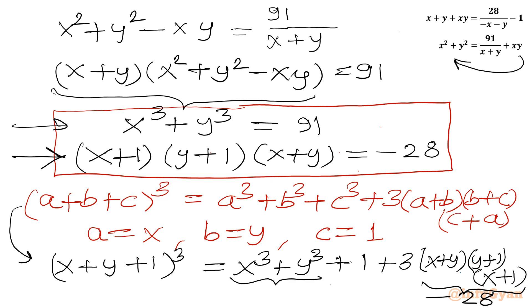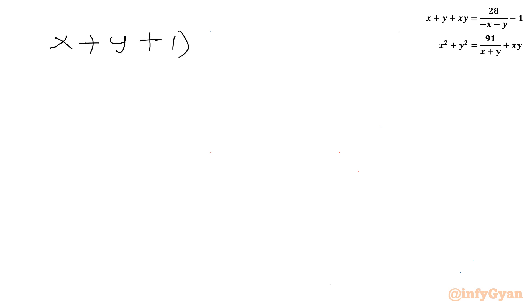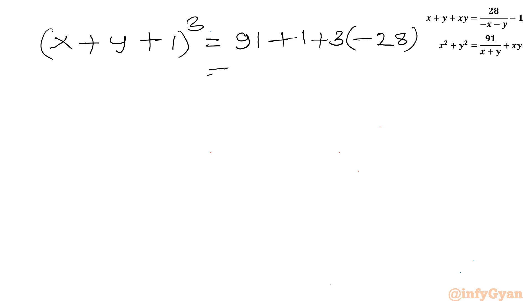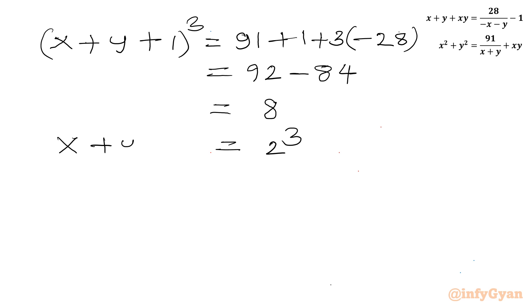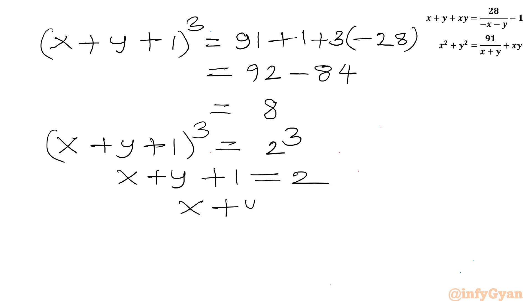From equation 1 the value of x cubed plus y cubed is 91, so I write 91 here. So: (x plus y plus 1) cubed equals 91 plus 1 plus 3 times negative 28. This becomes 92 minus 84, which equals 8, and 8 is 2 cubed. Taking cube roots of both sides: x plus y plus 1 equal to 2, so x plus y equal to 1.